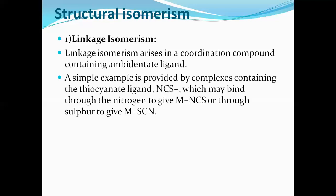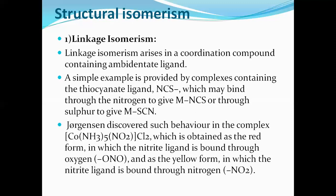A simple example: complexes containing thiocyanate (SCN) and isothiocyanate (NCS). Both have the same molecular formula but differ in the linking atom. In one complex, the sulfur atom of the ambidentate ligand links with the central metal atom. In another, the nitrogen atom of the ligand links with the central metal atom. Both complexes have the same central metal atom and ligands but differ in the linking atom — this is called linkage isomerism.